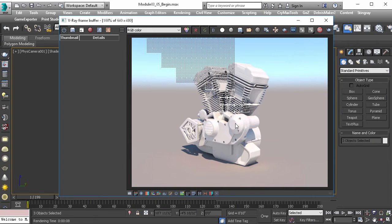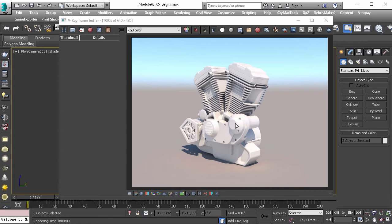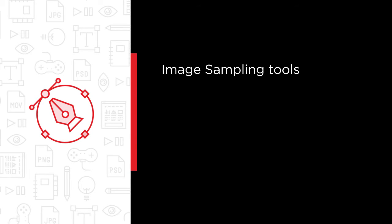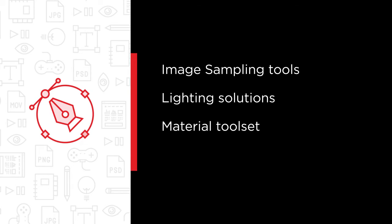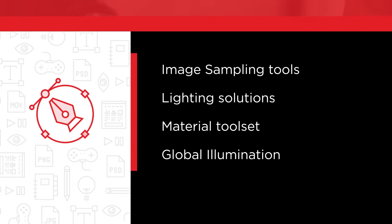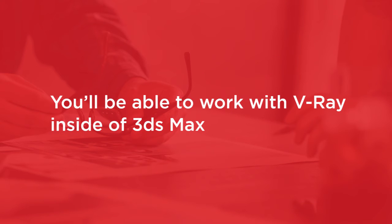In this course, we are going to streamline the process of learning V-Ray, boiling the toolset down to the most important concepts to get you up and running quickly, such as understanding the image sampling tools, setting up various lighting solutions, coming to grips with V-Ray's massive material toolset, and finally gaining control over the many parameters available for global illumination. By the end of this course, you will feel confident working with V-Ray inside of 3DS Max.